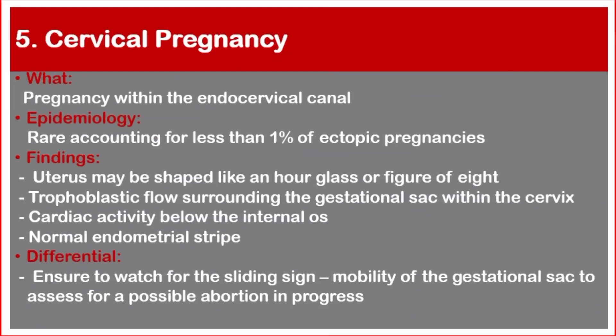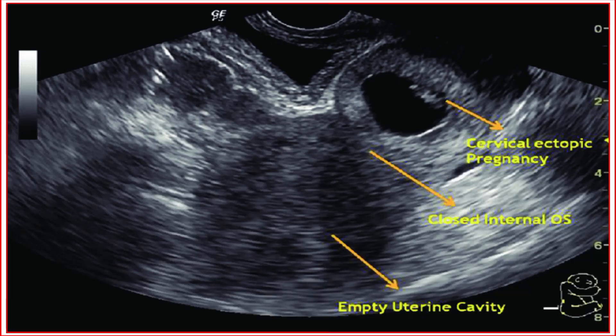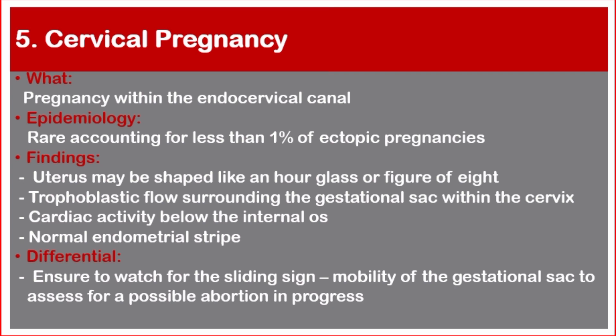Number five: cervical pregnancy — a pregnancy within the endocervical canal. Epidemiology: rare, accounting for less than one percent of ectopic pregnancies. Ultrasound findings: the uterus may be shaped like an hourglass or figure of eight; trophoblastic flow surrounding the gestational sac within the cervix; cardiac activity below the internal os; normal endometrial strip. Differential: watch for the sliding sign — mobility of the gestational sac. In a miscarriage in progress, the gestational sac slides against the endocervical canal when pressure is applied with the probe, but does not do so in a pregnancy implanted in the endocervix.